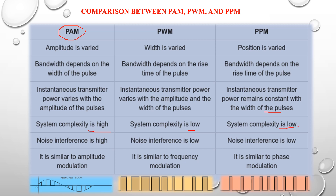In PAM, noise interference is very high. In PWM, noise interference is low. In PPM, noise interference is also low. In terms of analog modulation analogies: PAM is similar to Amplitude Modulation, PWM is similar to Frequency Modulation, and PPM is similar to Phase Modulation.